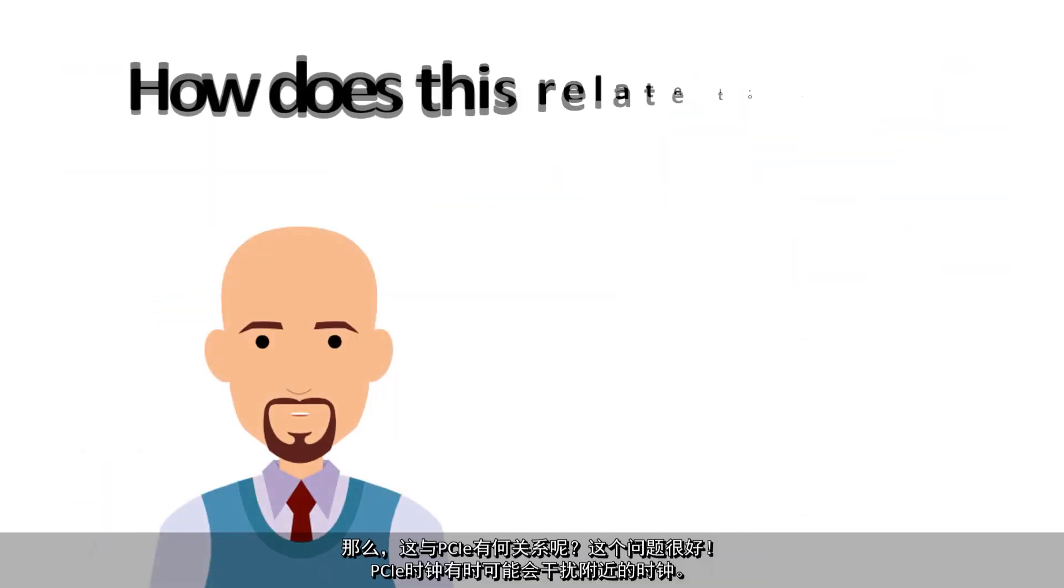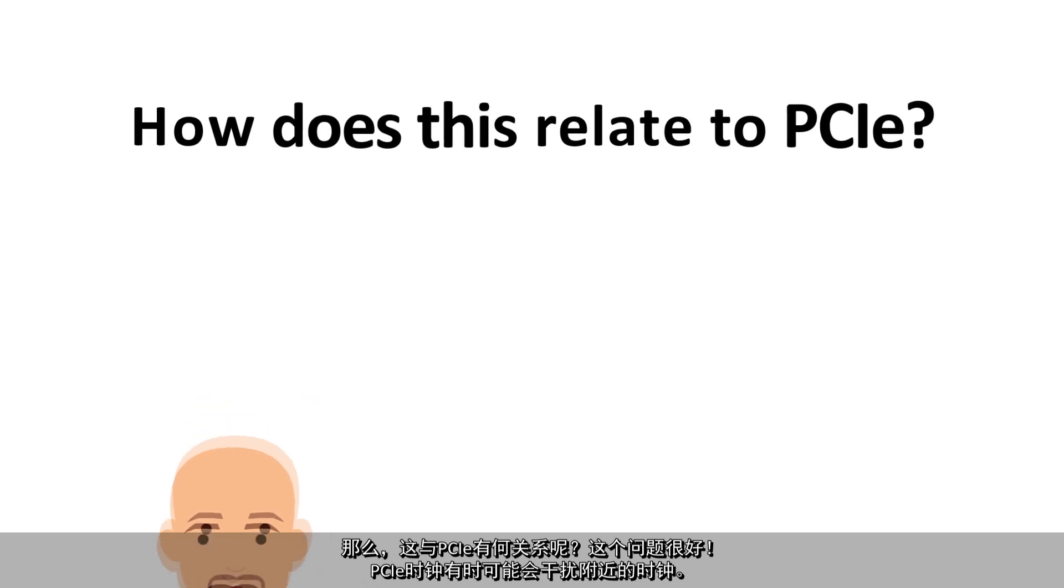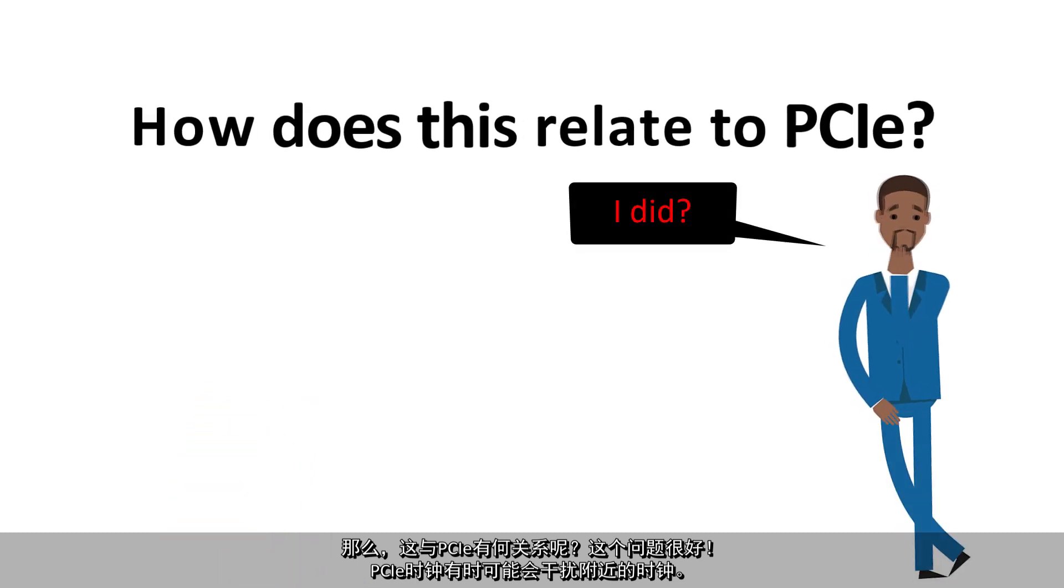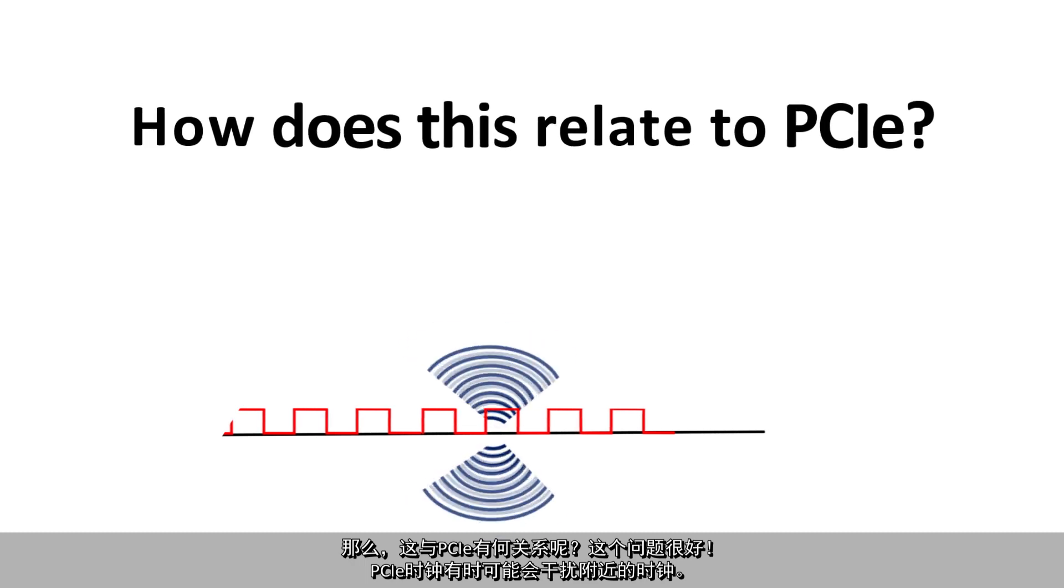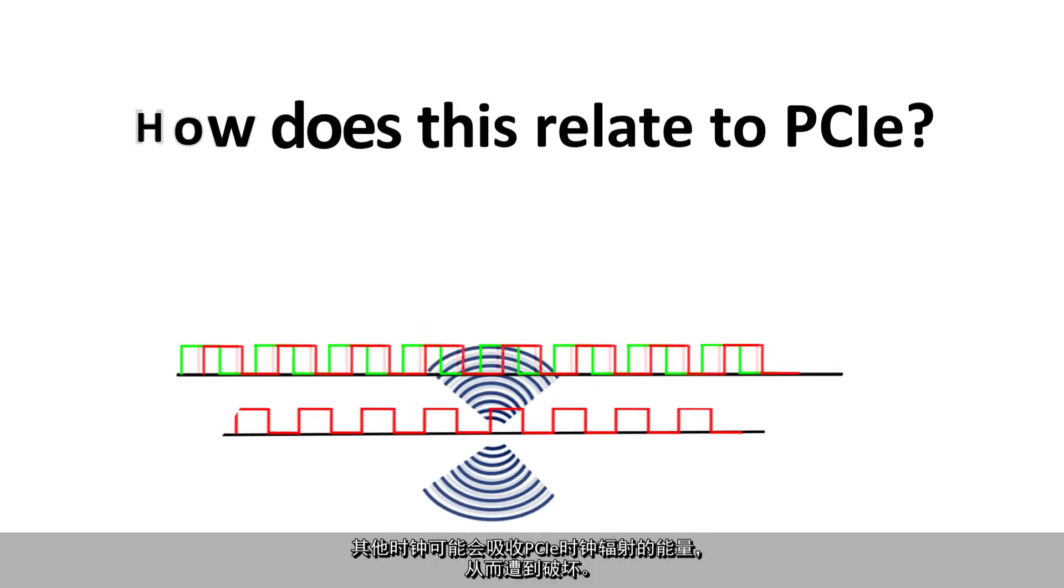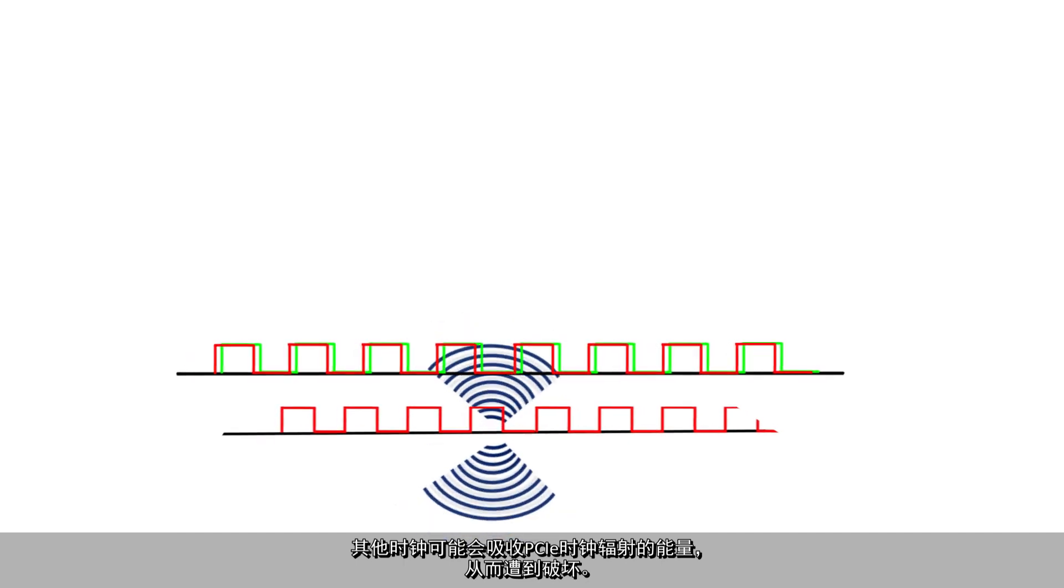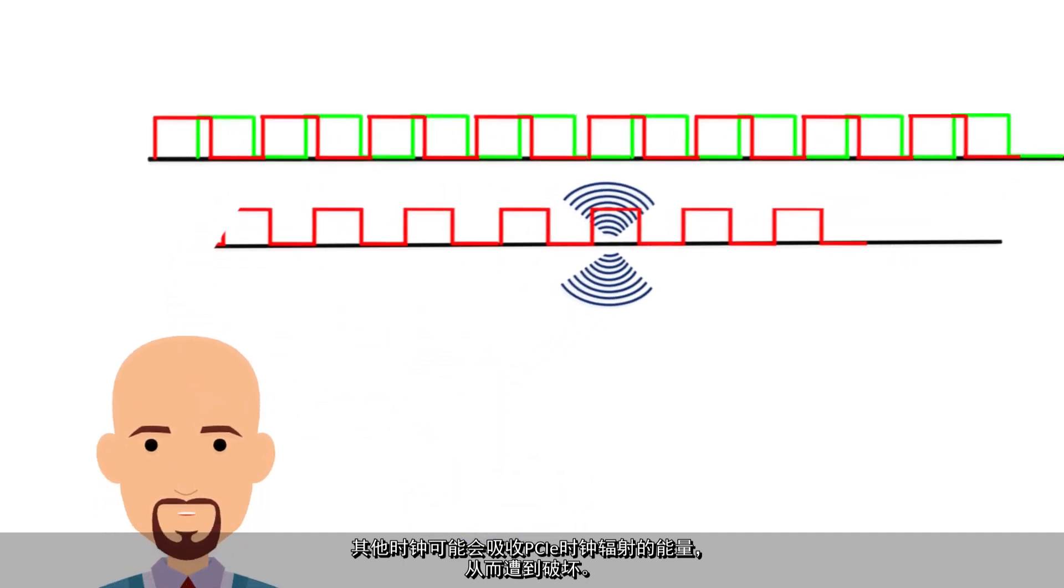So, how does this relate to PCIe? I am glad you asked! There are times when a PCIe clock may interfere with nearby clocks. Another clock may incorporate the radiated energy of the PCIe clock, thereby corrupting that other clock.